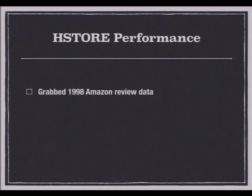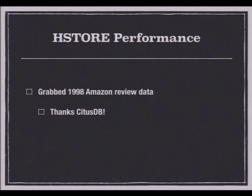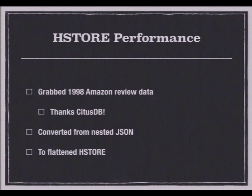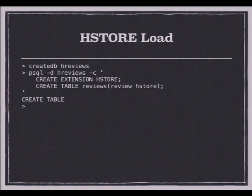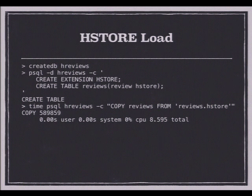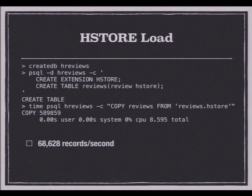Let's talk about performance. I grabbed 1998 Amazon review data that CitusDB posted in a blog post. I converted from nested JSON to a flattened HStore structure. I created a simple table with a single column of the HStore data type and copied the reviews — about 68,000 records per second to load. The file was 233 megabytes and ended up as a 256 megabyte database — around 10% storage overhead for HStore compared to the raw text file.